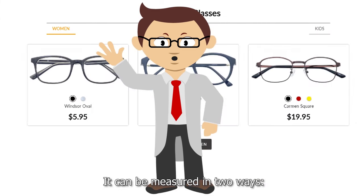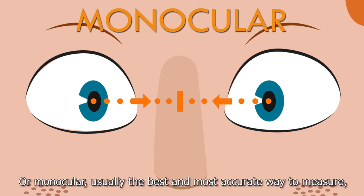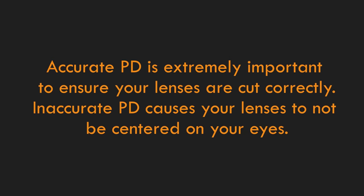It can be measured in two ways: binocular, which means the distance between the center of both pupils, or monocular — usually the best and most accurate way to measure — which is the distance between each individual pupil to the bridge of the nose.